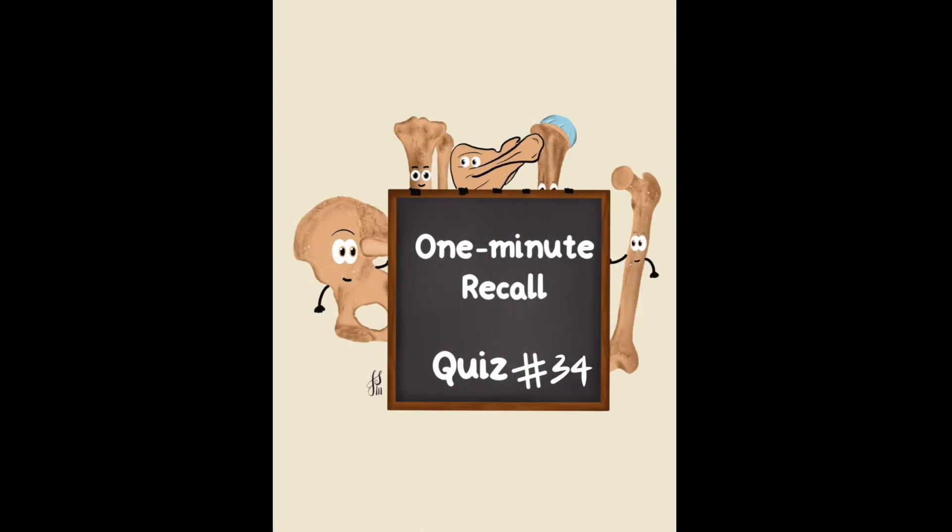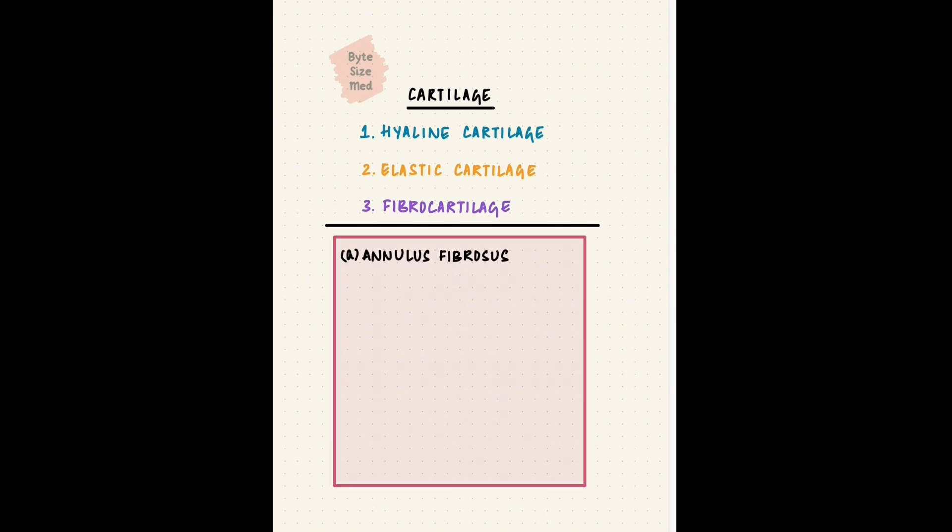Cartilage is located in different parts of the body. The three types are distributed in the body depending on their function. Your last task is to match the type with the location. Hyaline, elastic, and fibrocartilage. Now we put down some examples. Annulus fibrosus, the thyroid cartilage, medial meniscus, the auditory tube, the epiphyseal growth plate, and the epiglottis. You can pause the video here and take as much time as you need. Your task is to match the examples with the type of cartilage. But I just get one minute, so time's up.